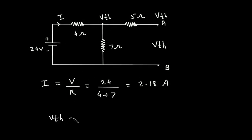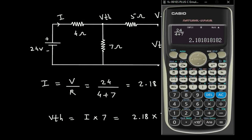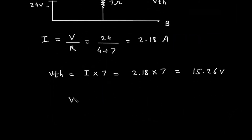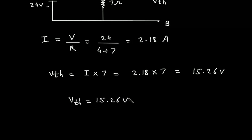So I is equal to 24 divided by 11, which is 2.18 ampere. Now VTH is equal to current I into this 7 ohm resistor, so I is 2.18 into 7, which gives 15.26 volt. Therefore VTH is equal to 15.26 volt.